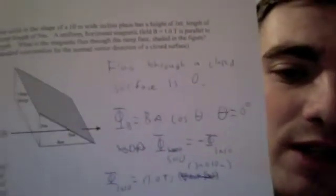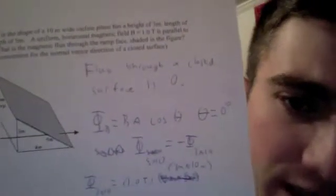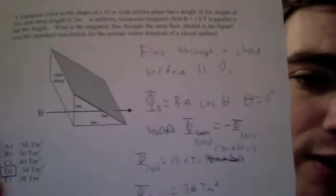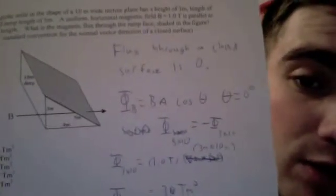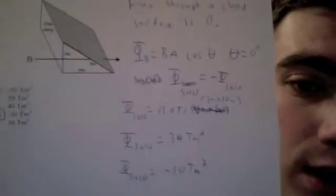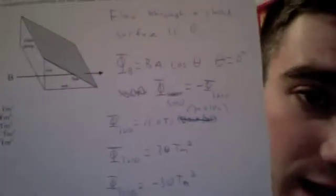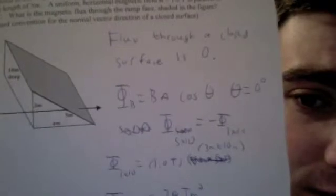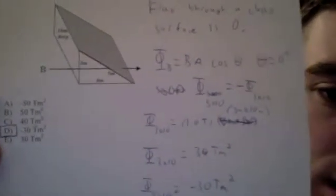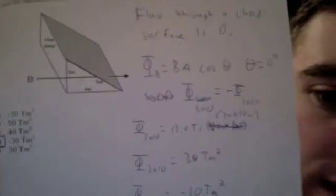So we have the equation for magnetic flux equals B A times cosine of theta. And since we are solving for the first one, since it is equivalent to the second one, theta is zero, so cosine of theta is one. So B is 1 tesla and the area is 10 meters times 3 meters, which gives a flux into the surface of 30 tesla meters squared.